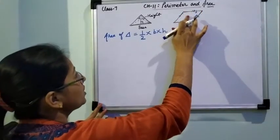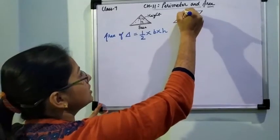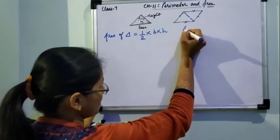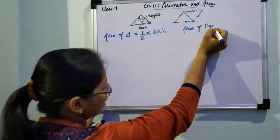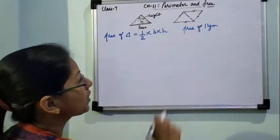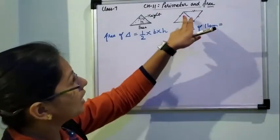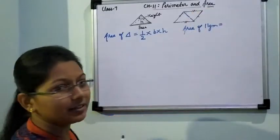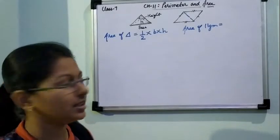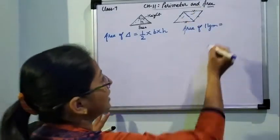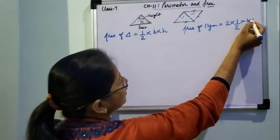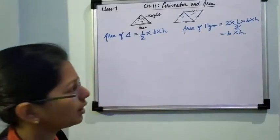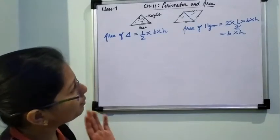For area of parallelogram — if you look carefully, if I draw a diagonal of a parallelogram, a diagonal divides the parallelogram into two triangles. This parallel sign and 'gm' is the shortcut symbol for parallelogram. So area of parallelogram is double the area of a triangle, because a diagonal divides the parallelogram into two equal triangles. Therefore area of parallelogram equals 2 into half into base into height, and the 2 and half cancel out. So in short, area of parallelogram is base multiplied by height.